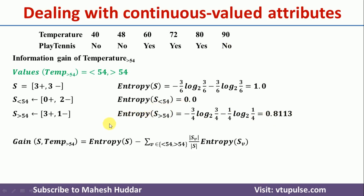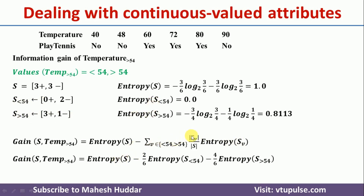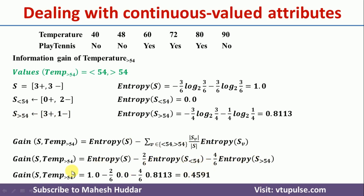Once we calculate these entropies, we put them into the information gain equation. The information gain of temperature with threshold 54, with respect to the whole dataset, equals the entropy of the whole dataset minus the sum of (|Sv| / |S|) × entropy(Sv) for each subset Sv — where Sv is S_less-than-54 and S_greater-than-54. Here, less-than-54 appears 2 times out of 6, and greater-than-54 appears 4 times out of 6. Putting in the values, we get an information gain of 0.4591 for temperature with boundary 54.